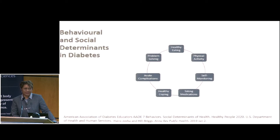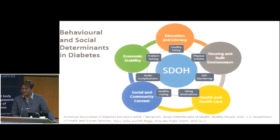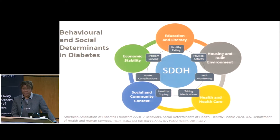Diabetes is a behaviorally demanding, complex condition. There are several behaviors necessary for effective management of the disease — these are the seven from the American Association of Diabetes Educators, which standardizes diabetes care and education in America. Notice that problem-solving is there, and decision-making is deemed an essential self-care behavior. These self-care behaviors exist in the context of social determinants, which are the primary ones we think about when planning interventions for diabetes.